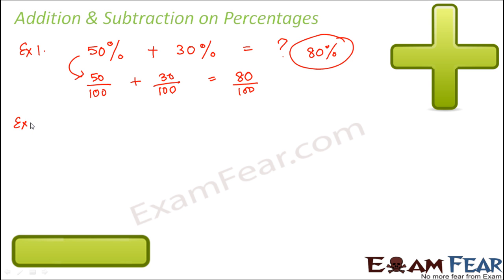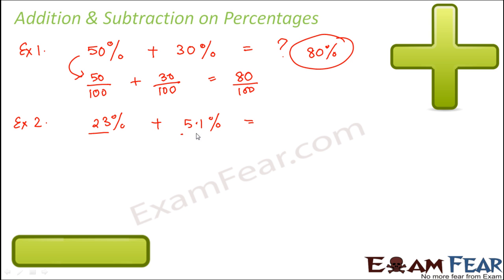Let's look at another example. If you are adding 23% with 5.1%, you just add 23 with 5.1 to get 28.1%.